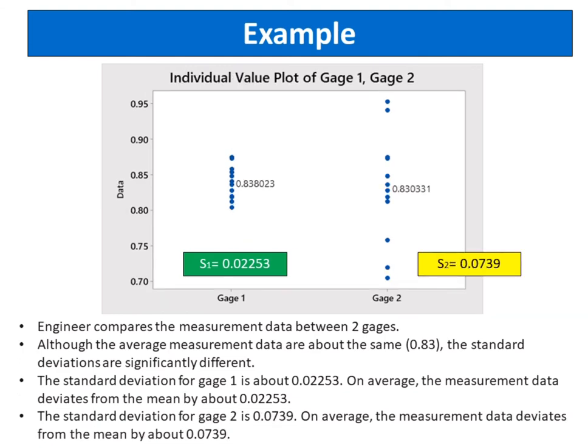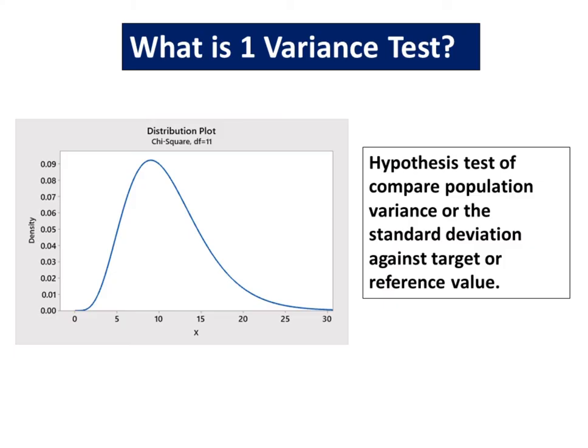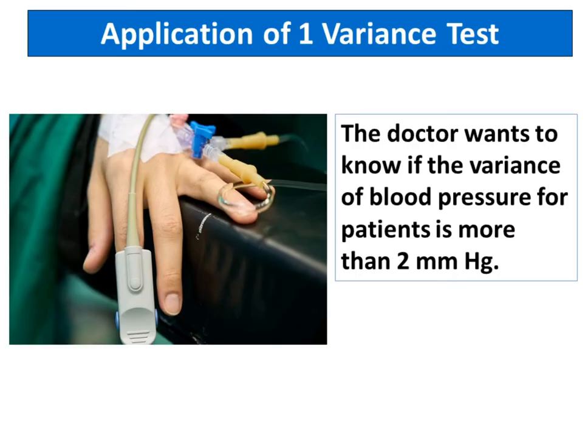The standard deviation for gauge two is 0.0739. On average, the measurement data deviates from the mean by about 0.0739. One variance test is a hypothesis test to compare population variance or standard deviation against target or reference value. For example, the doctor wants to know if the variance of blood pressure for patients is more than 2 millimeters Hg.